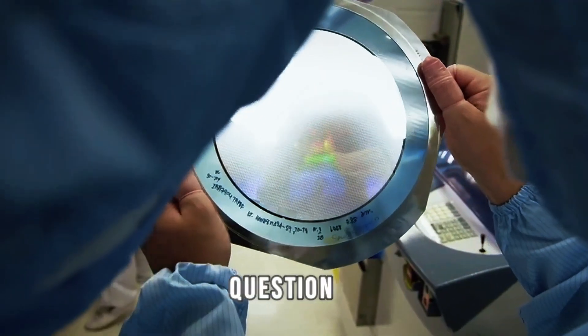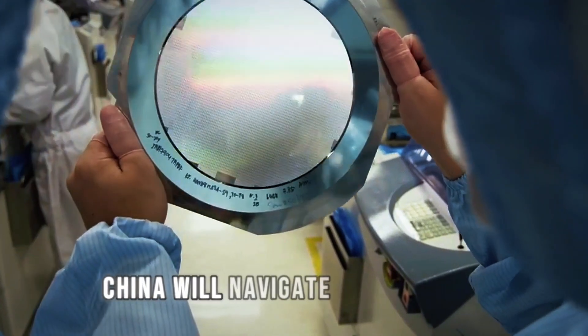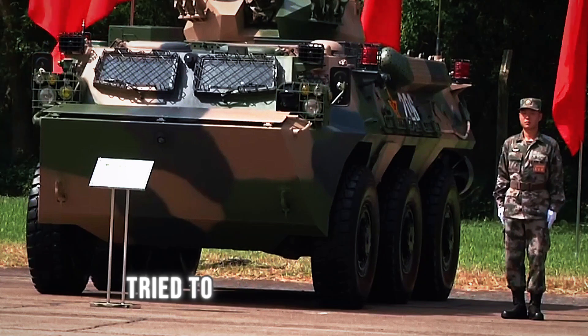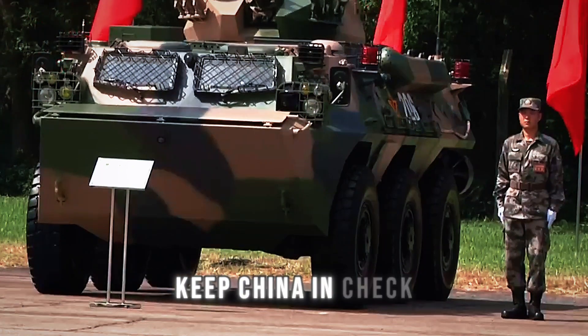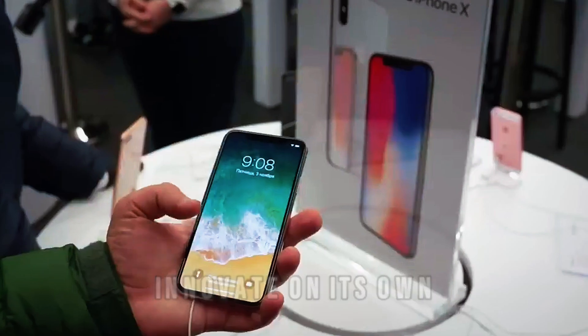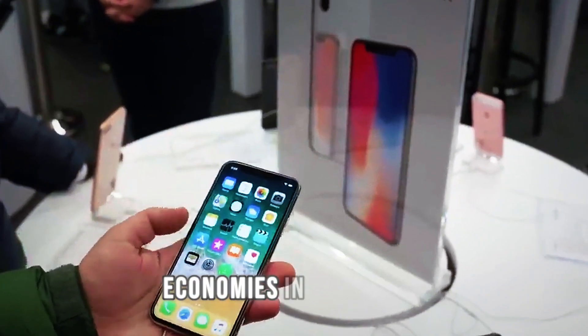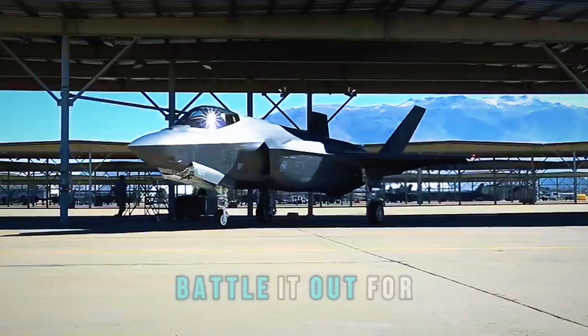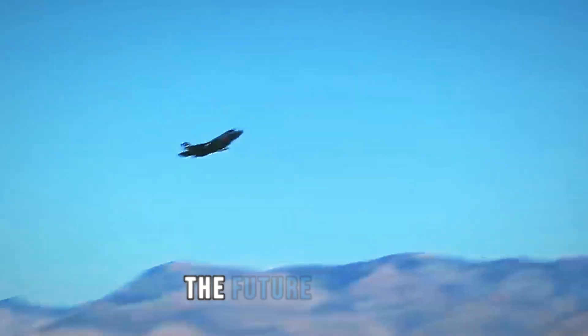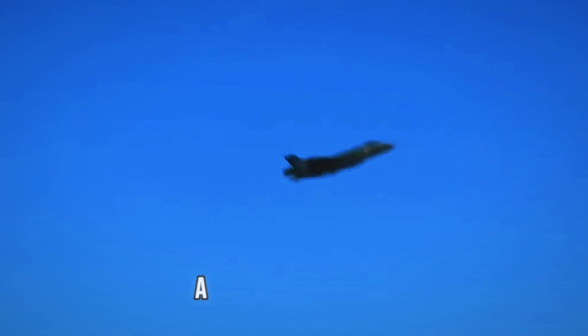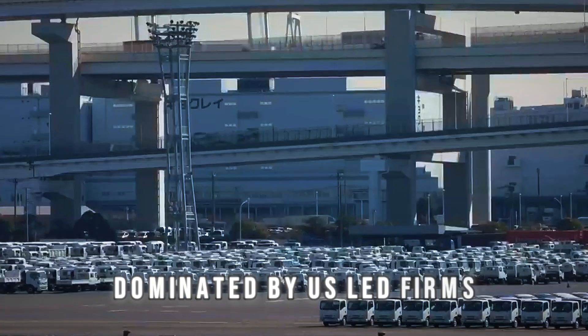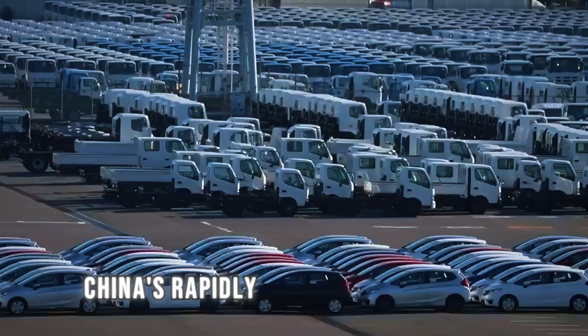Looking ahead, the big question is how the US and China will navigate this growing divide in the tech industry. While the US has tried to leverage sanctions to keep China in check, the reality is that China is showing it can innovate on its own. As the two largest economies in the world battle it out for supremacy in the tech space, we're going to see a lot more tension. The future of tech could very well become a two-tiered system, with one side largely dominated by US-led firms and the other by China's rapidly advancing industries.